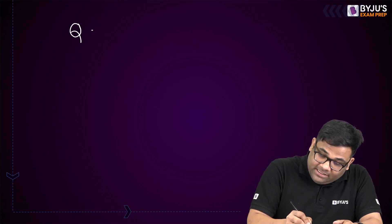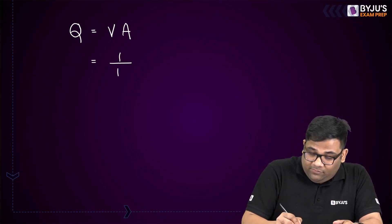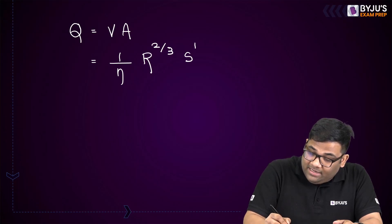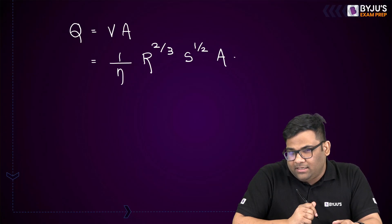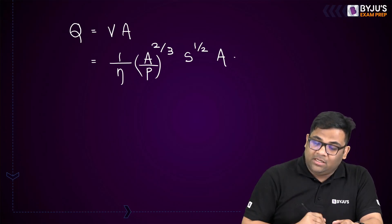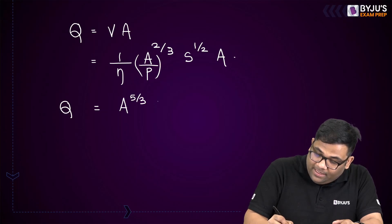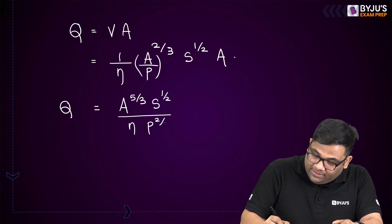In uniform flow, we have seen Manning's equation. As per Manning's equation, the discharge is velocity into the area of flow. The velocity expression is 1 by the Manning's constant, then hydraulic radius to the power 2/3, then bed slope to the power half. This area term will also come into picture because it is discharge.